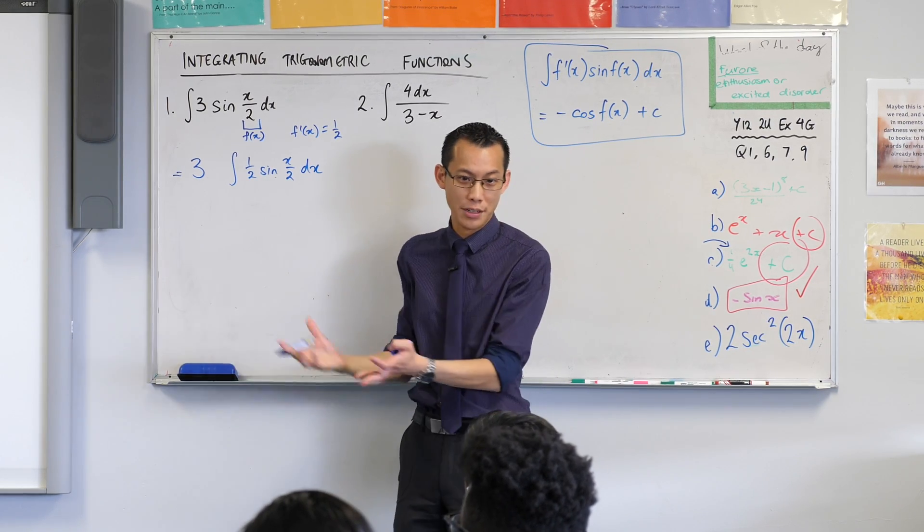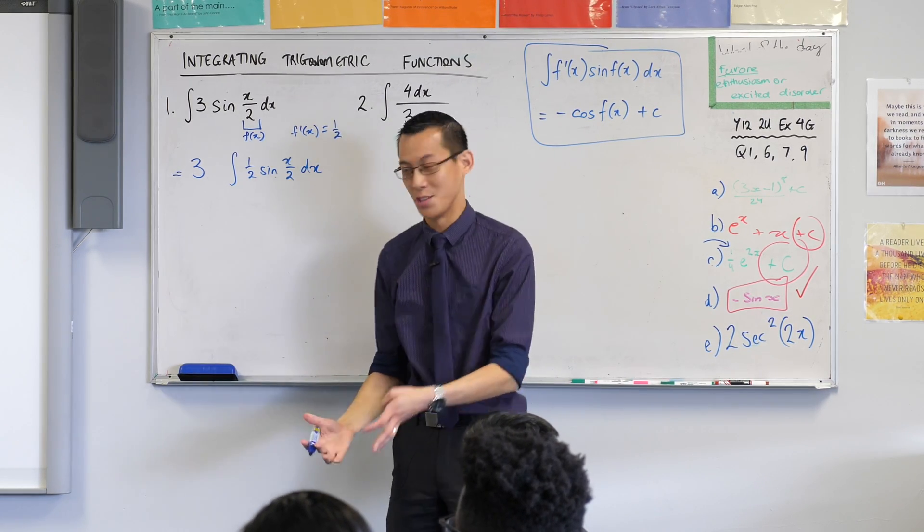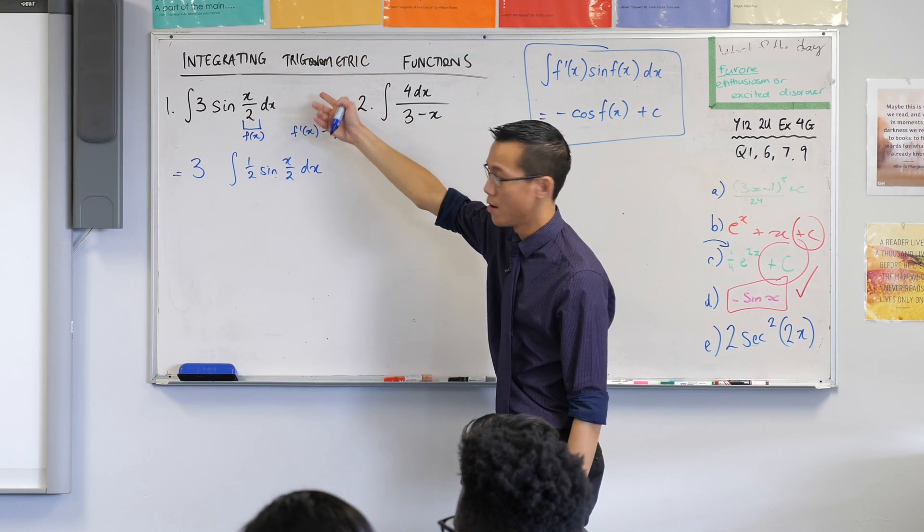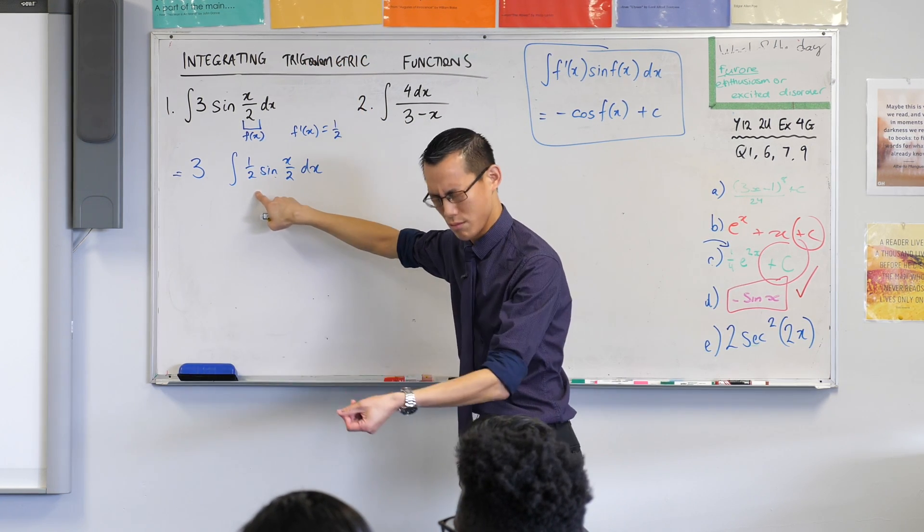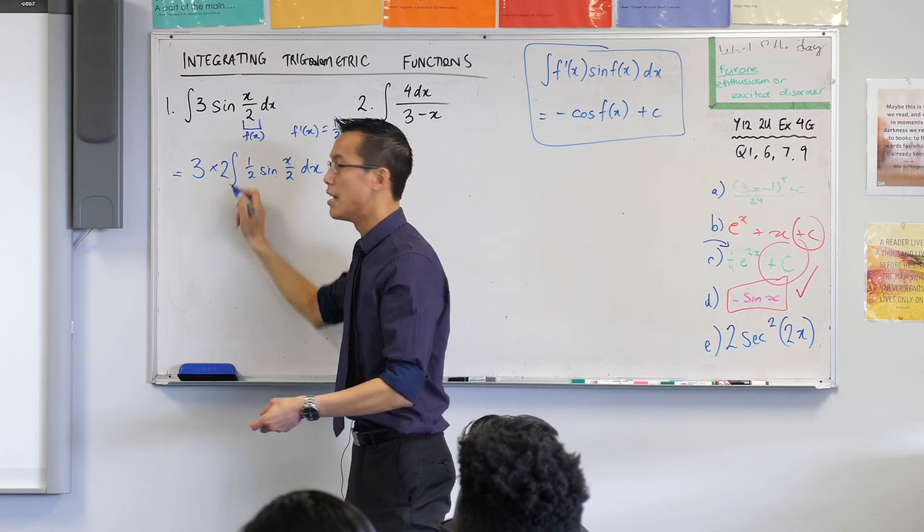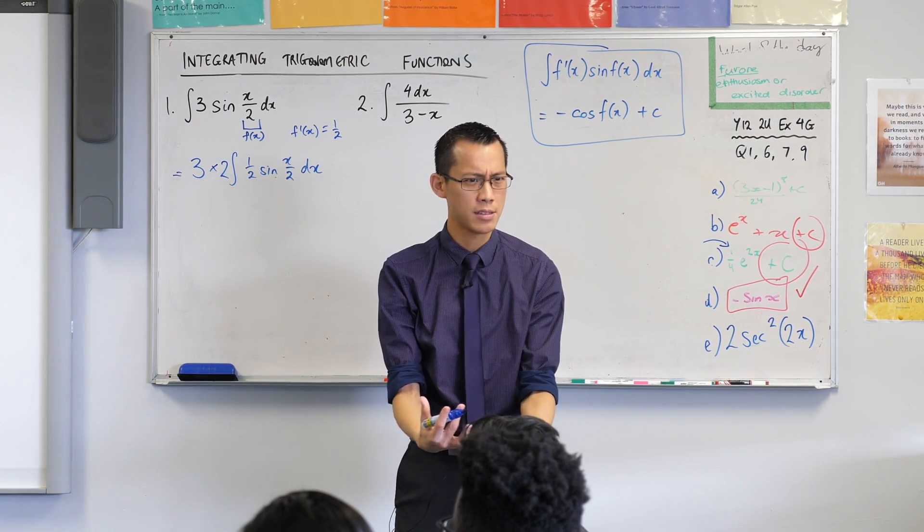That would be nice because it would exactly match this form with respect to x. Now of course you can't just go around putting halves in because it's more convenient to you. We have to make sure this stays equivalent to what we had before. So what would undo this multiplication by a half? There should be a 2 to compensate for that. Does that make sense?